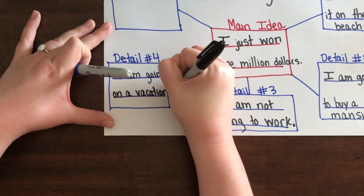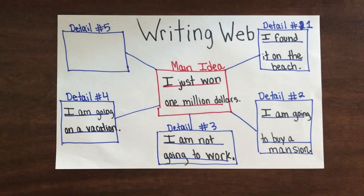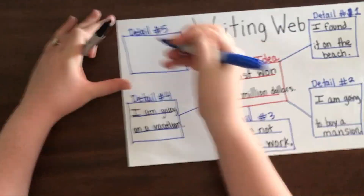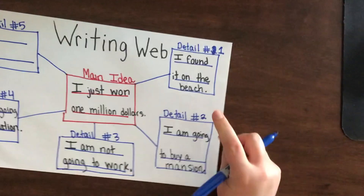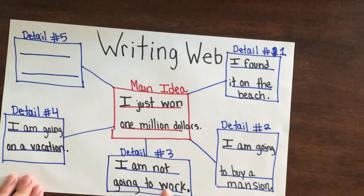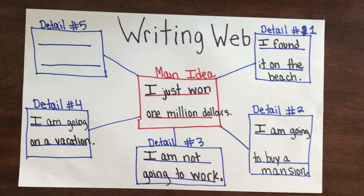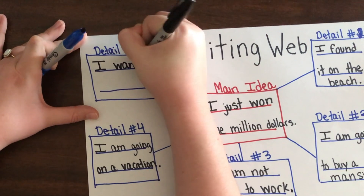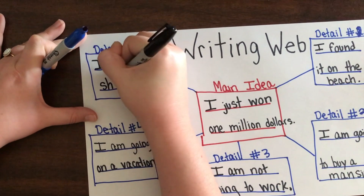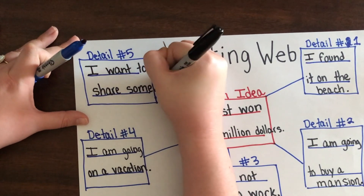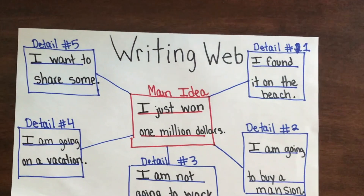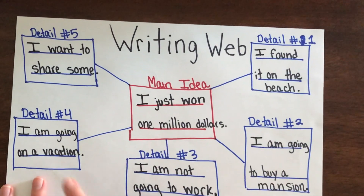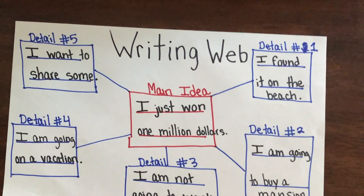I have one, two, three, four details so far, and they are all full and complete sentences. Let's do one last detail. So far I've answered where I found the money, what I'm going to do with it, what I'm not going to do, and where I'm going to go. Well, Detail Number Five: 'I want to share some of that million dollars with my family,' because if I have that much money I want to make sure my family is taken care of.